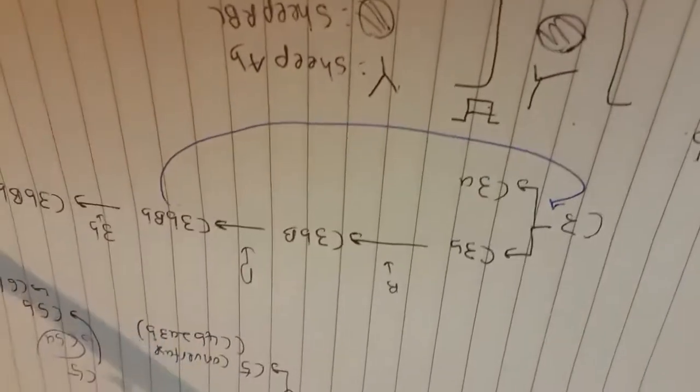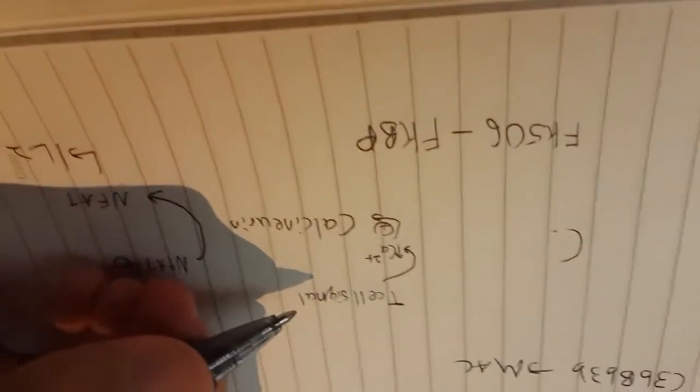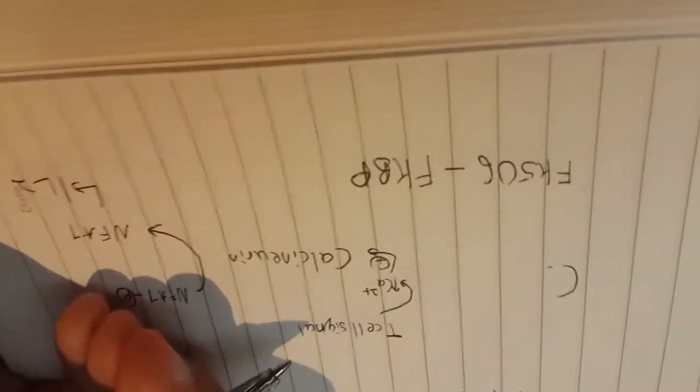As for the last question, tacrolimus. Keep in mind that tacrolimus is also known as FK506. So to understand the mechanism of action of tacrolimus, we first need to understand the calcineurin pathway.